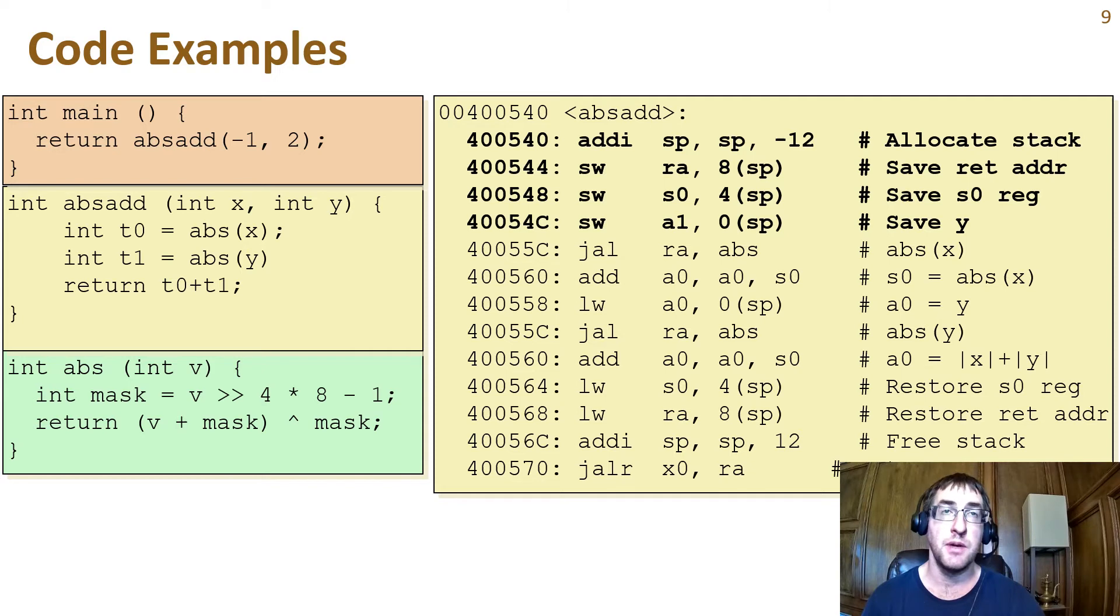We need to save the argument register for y because it is a caller saved register, and we need to preserve its value over the first sub procedure call to abs. Then we make the call with jump and link. Because x is still in a0, we don't have to do anything to make sure the right argument gets passed through.